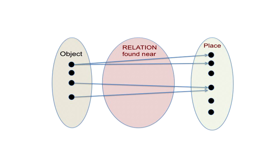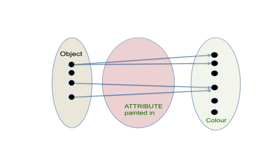Consider the relation 'found near' — an object found near some place. What you see in this picture is a set of objects, a set of places, and a set of object-place pairs, where the meaning is that the object was found near a place. In the next picture, we have a set of objects and a set of colors, where the pairing means the object is painted by a certain color — and an object may be painted with one color or more. This set of pairs denotes an attribute: 'object painted in color'. Relations and attributes can be captured in practically the same way, so we can treat them syntactically in the same way.